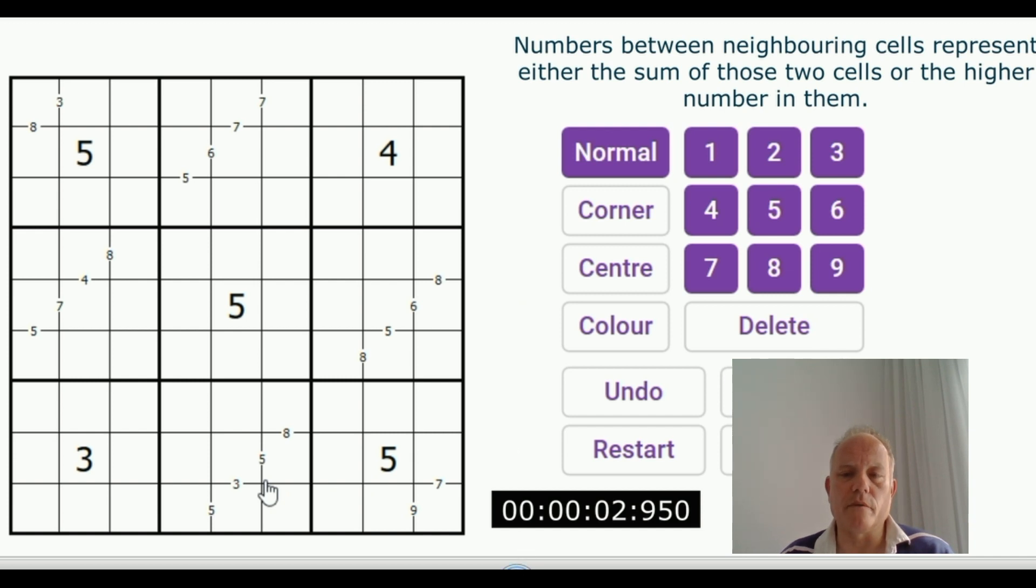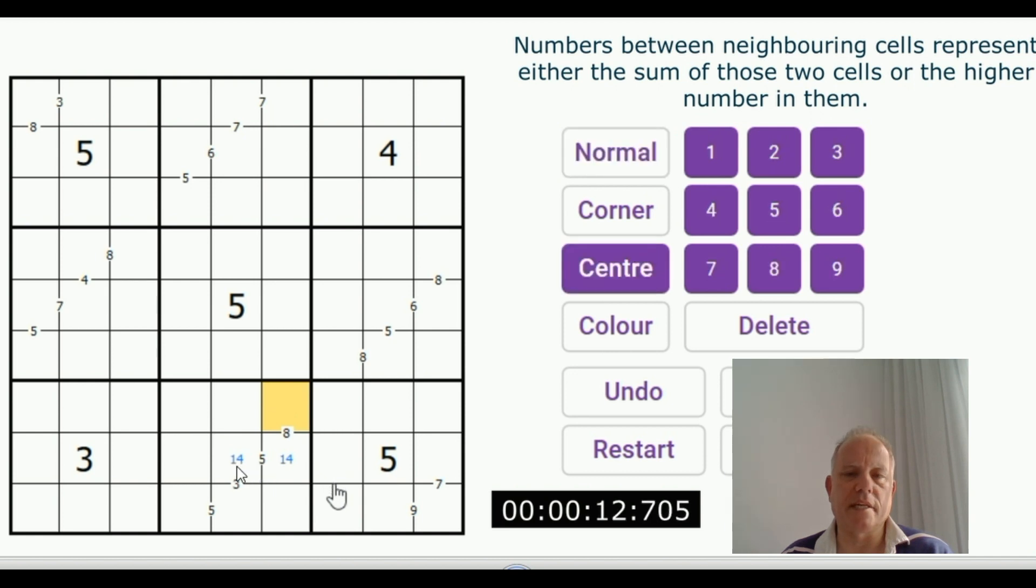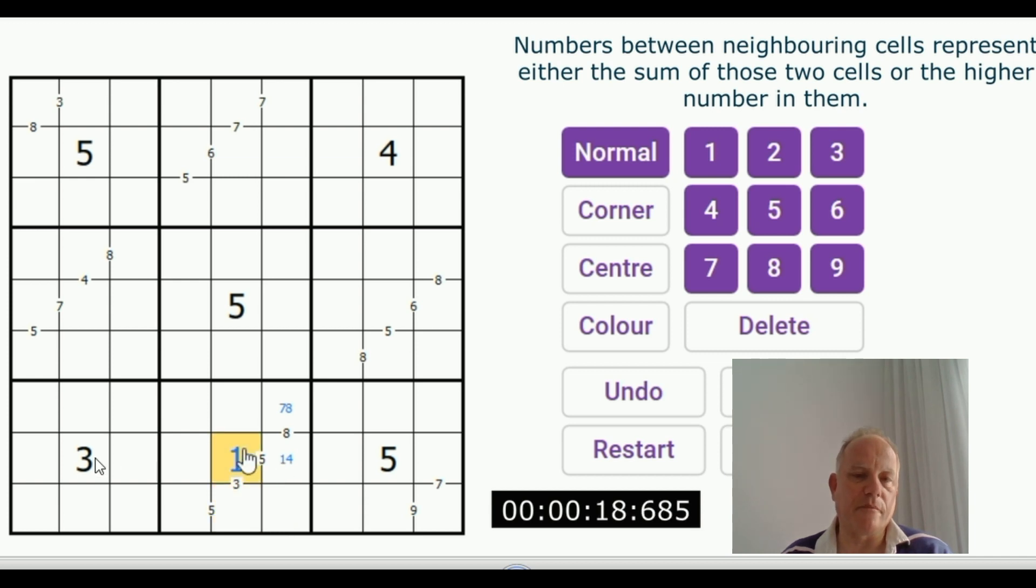Here we go, here's the timer. Start. There's clearly three given fives and I was wondering if that helps. In fact, with this five it's very useful because that can't be a five representing the higher digit, so it must be a pair making up the sum of five. We've already got a three in the row so that's one and four.